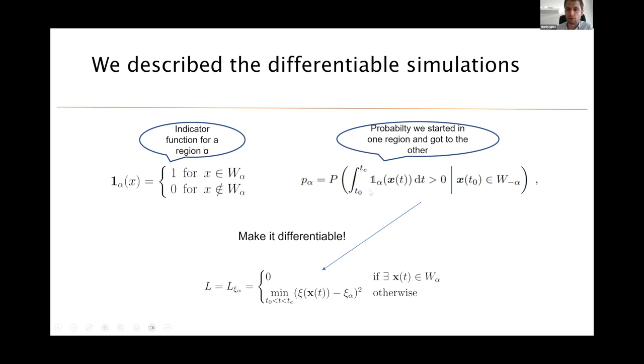And how to make this thing differentiable? We just rewrite it. We are not only interested in whether we got there by indicator function, but if we got there, we assign loss to zero. And if we did not get there, we actually consider the closest point to our target. And we will minimize the distance of the closest point of our trajectory to the target. So if we started in the reactants, we will simulate, we will calculate the closest point to where we want to go and minimize the distance.